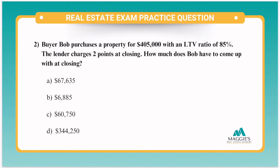Question number two. Buyer Bob purchases a property for $405,000 with an LTV ratio of 85%. The lender charges two points at closing. How much does Bob have to come up with at closing?